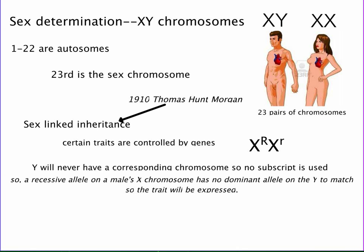There are certain traits controlled by sex genes, and we designate them by putting them as a superscript on the X. If they are controlled by the Y, we never use that notation because there is no homologous chromosome to cover it — Y will never have a corresponding chromosome, so no subscripts are ever used. But if a recessive allele on a male's X chromosome has no dominant allele on the Y to match, that trait is going to be expressed. We see this in colorblindness and a couple of other recessive traits.